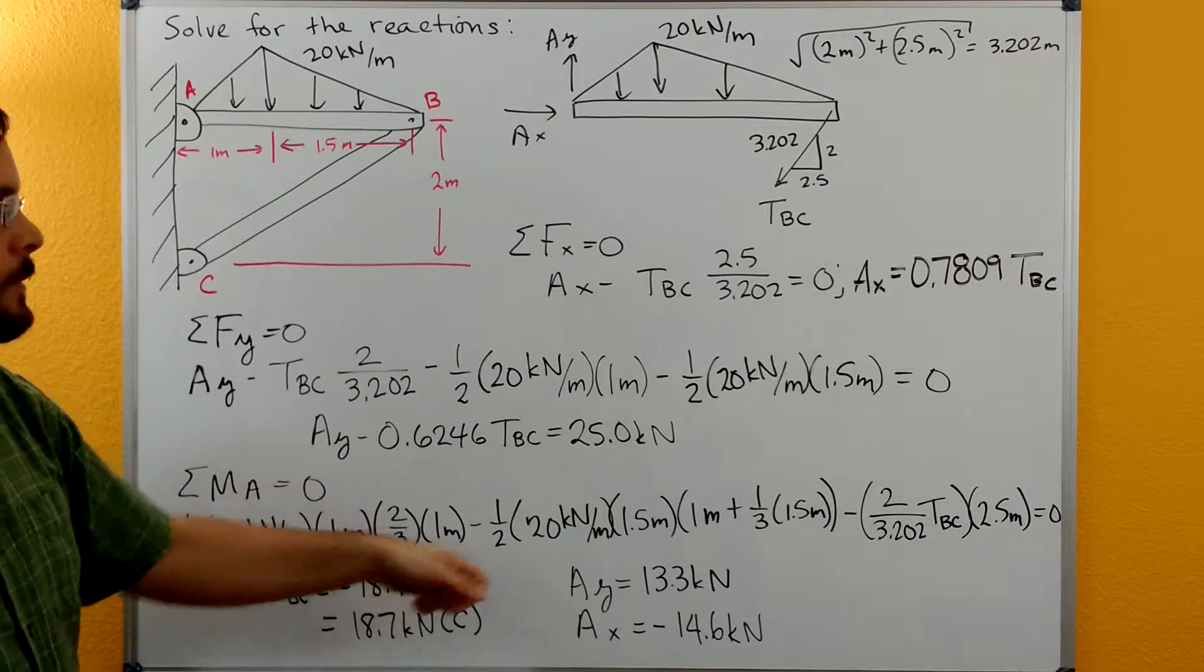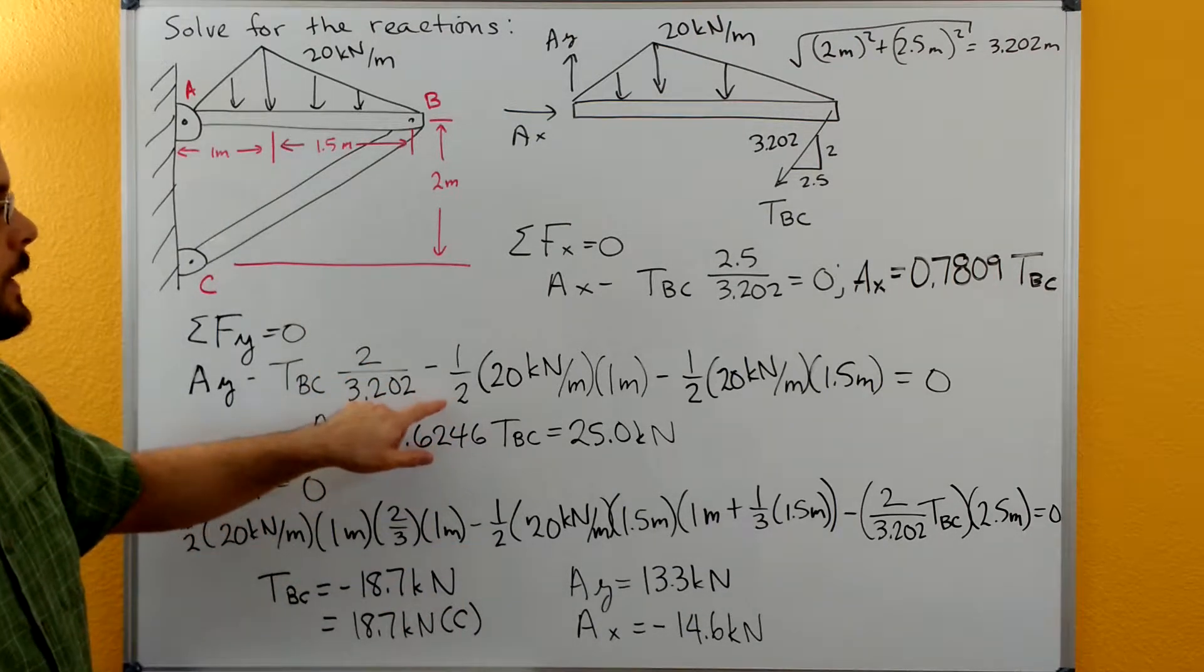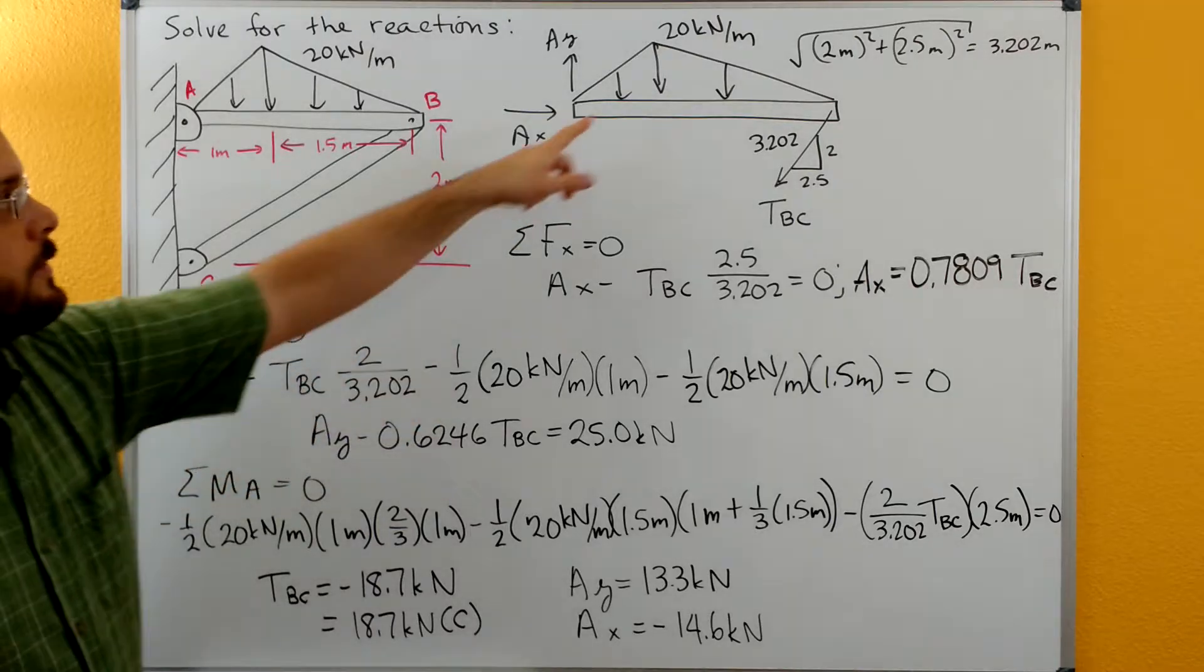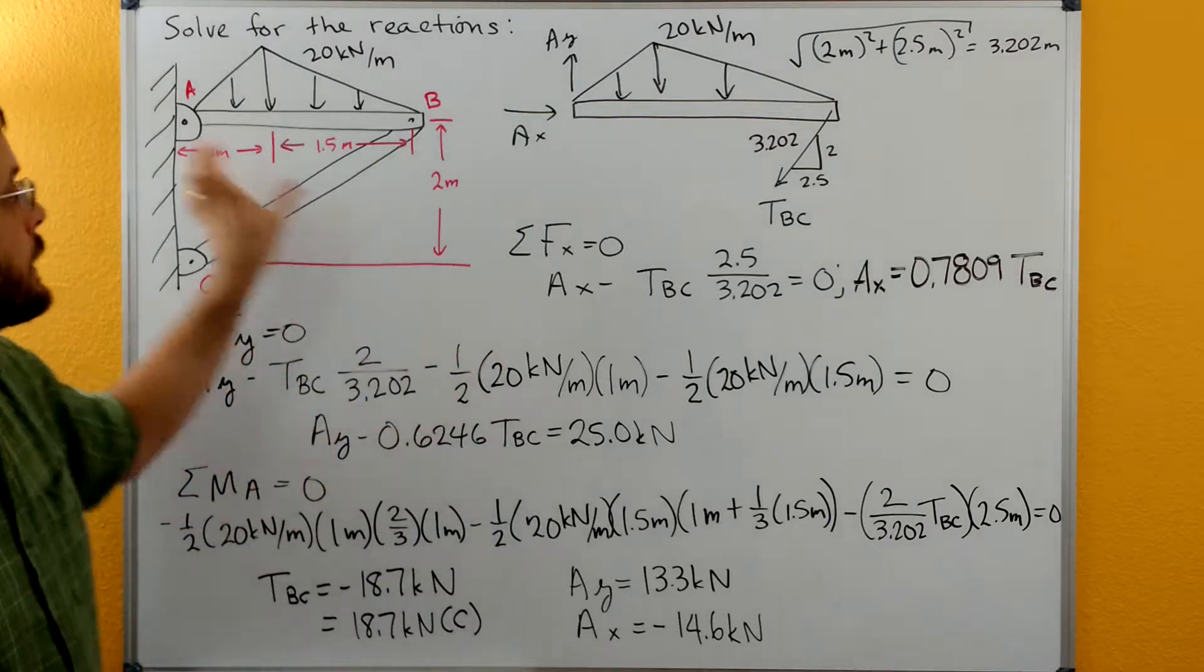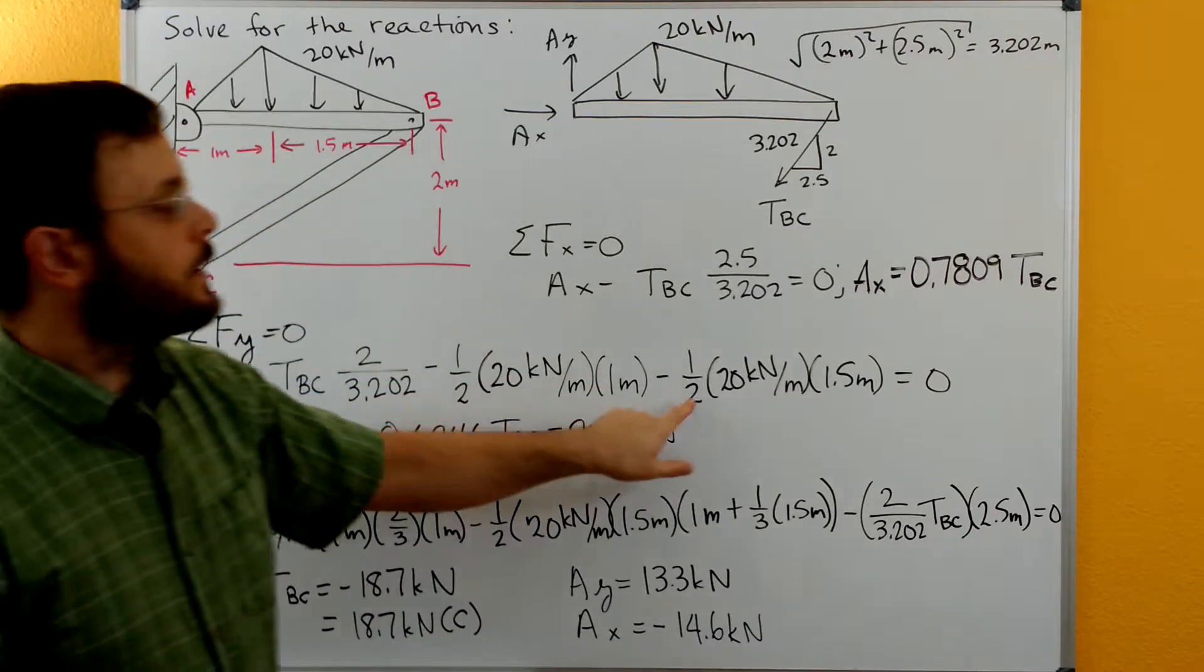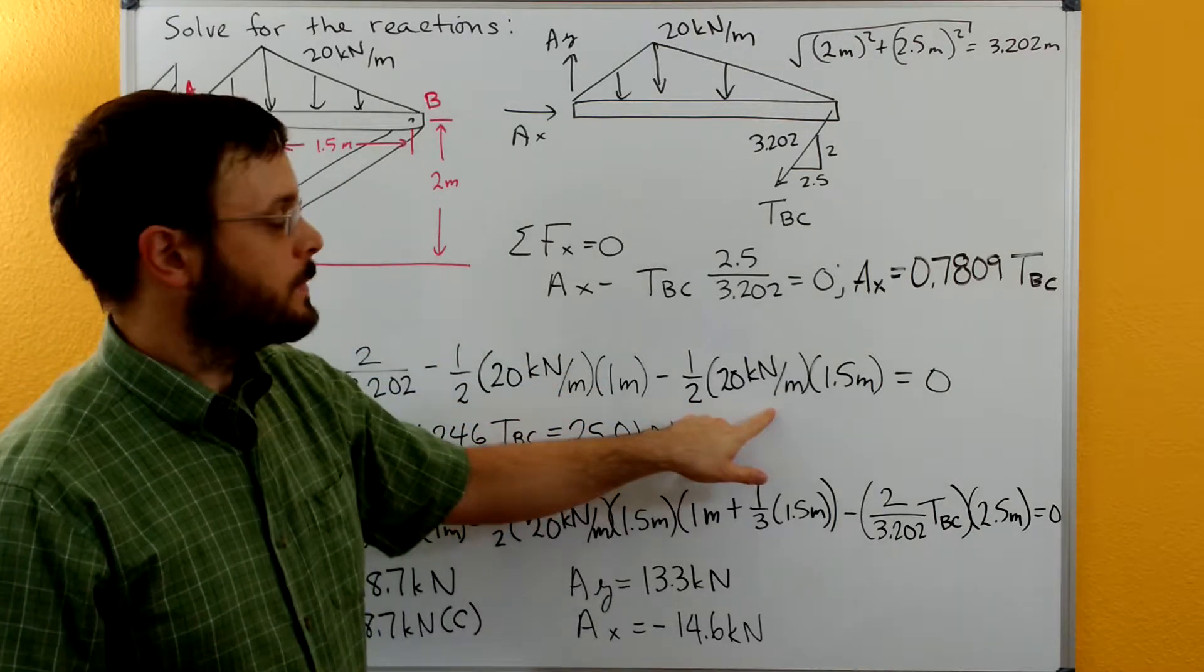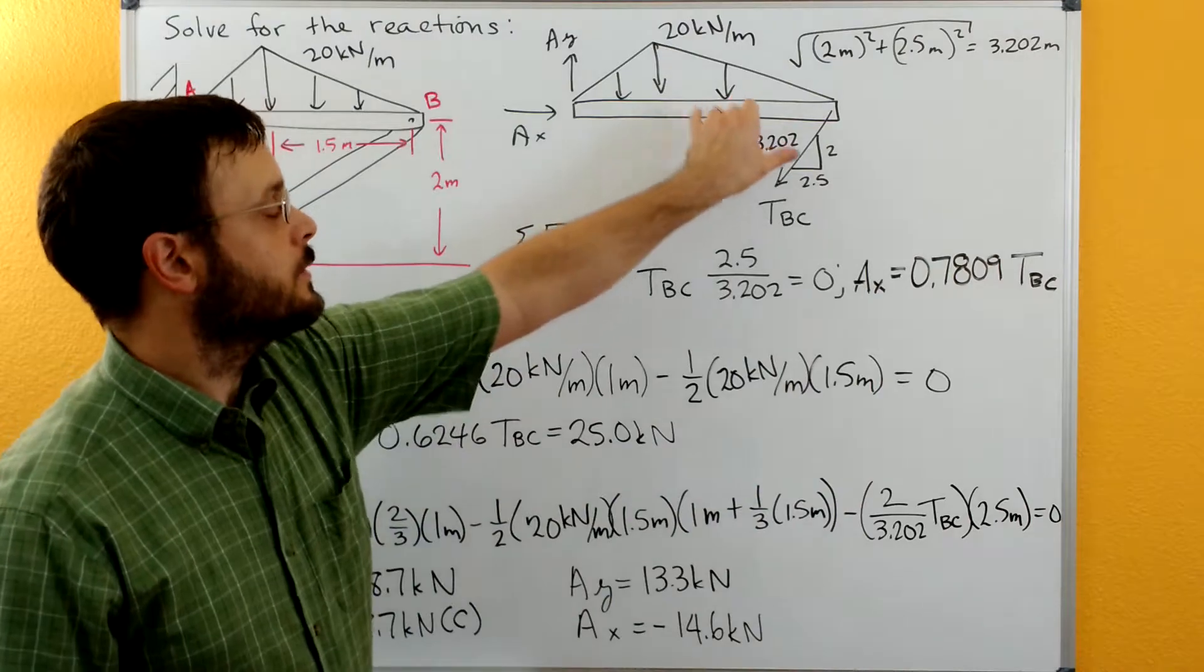For the sum of forces you could have done it as just one large triangle that would have worked and then broken it up here. Either way would be fine. But the two individual smaller right triangles, one half times 20 kilonewtons times the one meter here and then one half times 20 kilonewton per meter times the 1.5 meters over here.